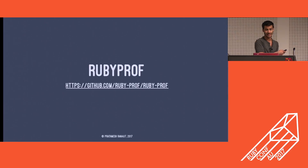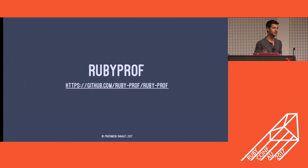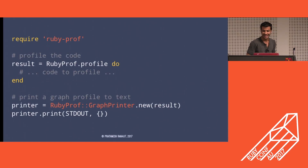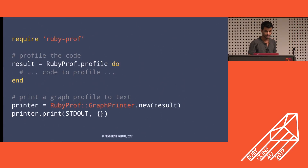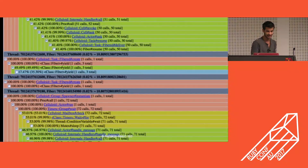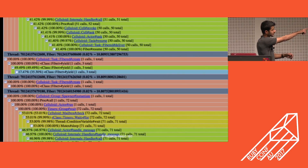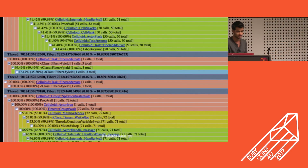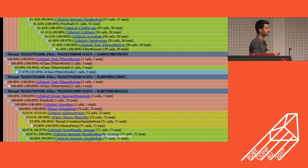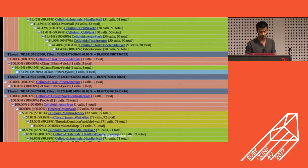Next is RubyProf — I'm sure a lot of you have heard about it and it's actually one of the most-used tools by me in Celluloid. All you need to do is place the code you want to profile in the block, and at the end there's a graph printer. The most beautiful part is that it divides your program individually by each thread, and then you can look into each thread and see what exactly is slowing your code down. For example here, class timers weight is actually taking up 99.9% of the CPU.